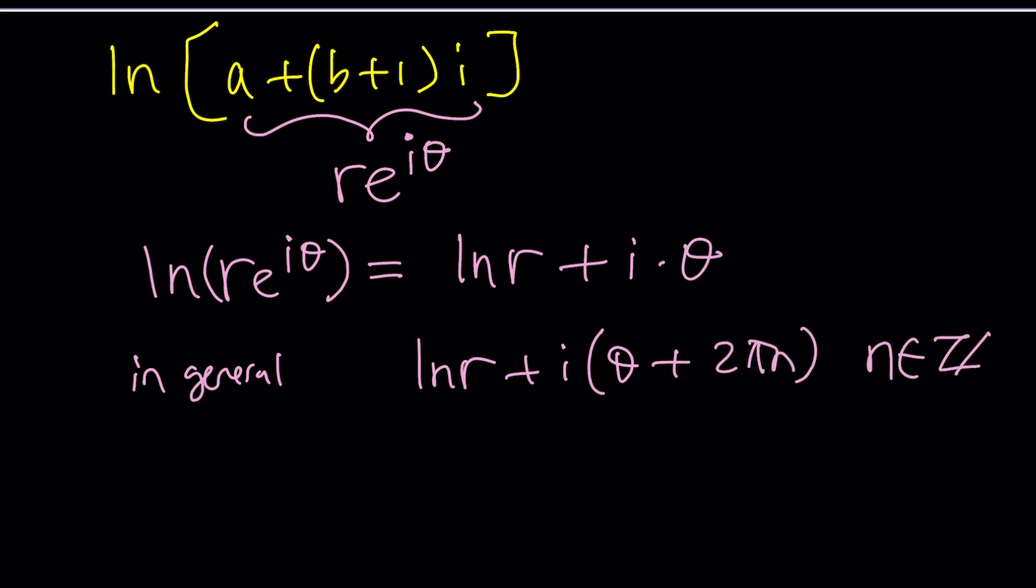And in general, you can write this as ln r plus i times theta plus 2 pi n where n is an integer. Because you can add multiples of 2 pi and notice that e to the power 2 pi n i is 1. So you can basically multiply this by that.